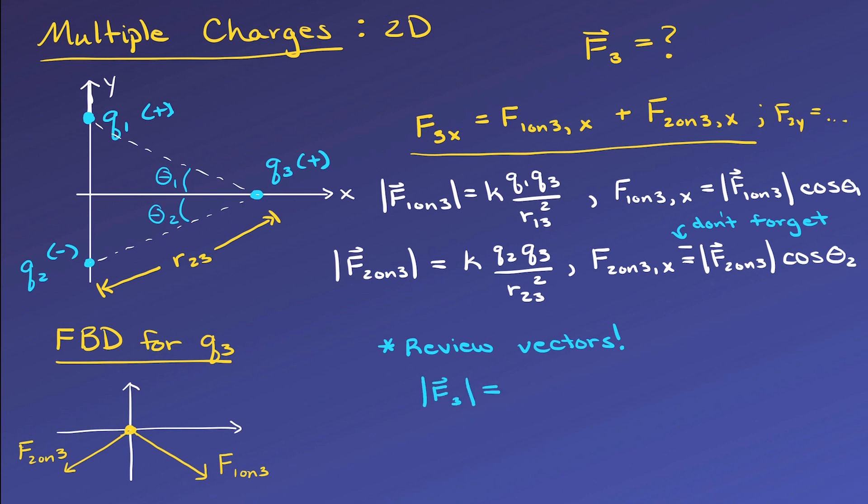Once we have all of the components, like always, we add the x components together, we add all the y components together. And then we can get the overall magnitude of the force on charge 3 using the Pythagorean theorem. And finally, we can get the direction of F3 by using inverse tangent of F3x and F3y if we want to.